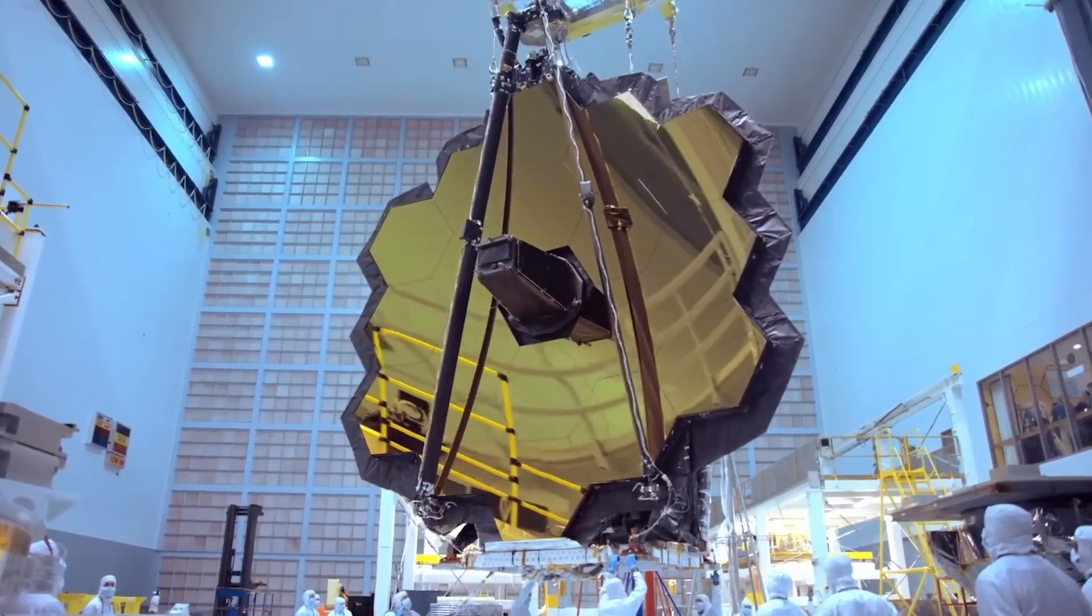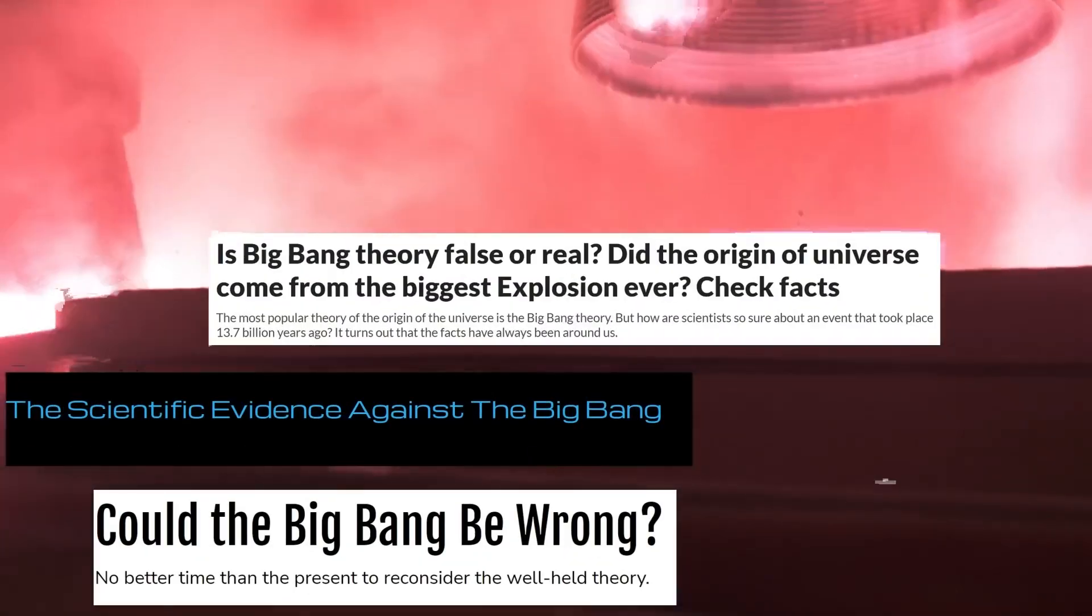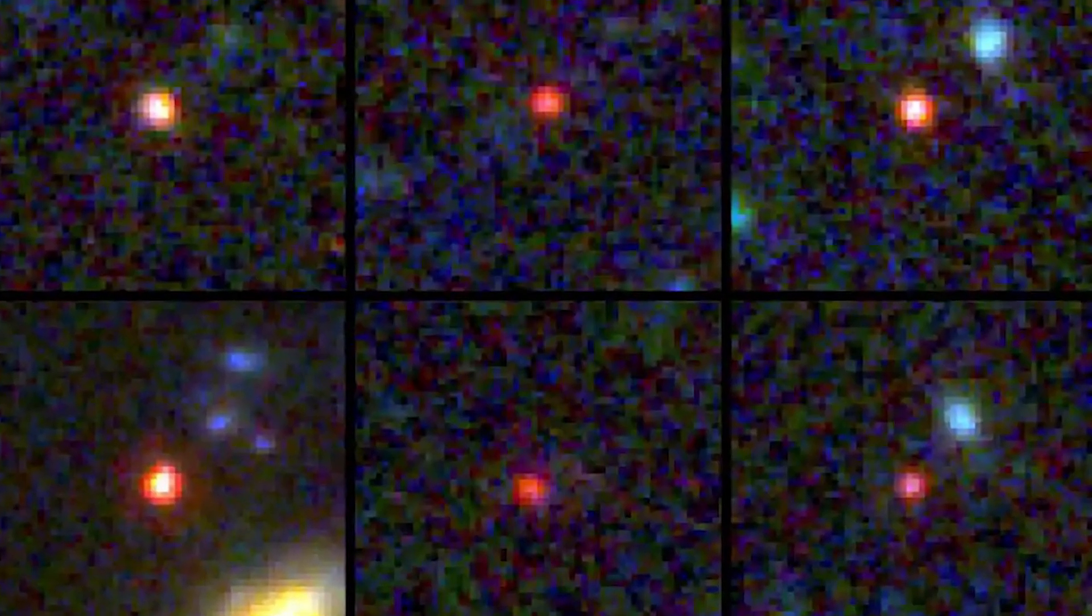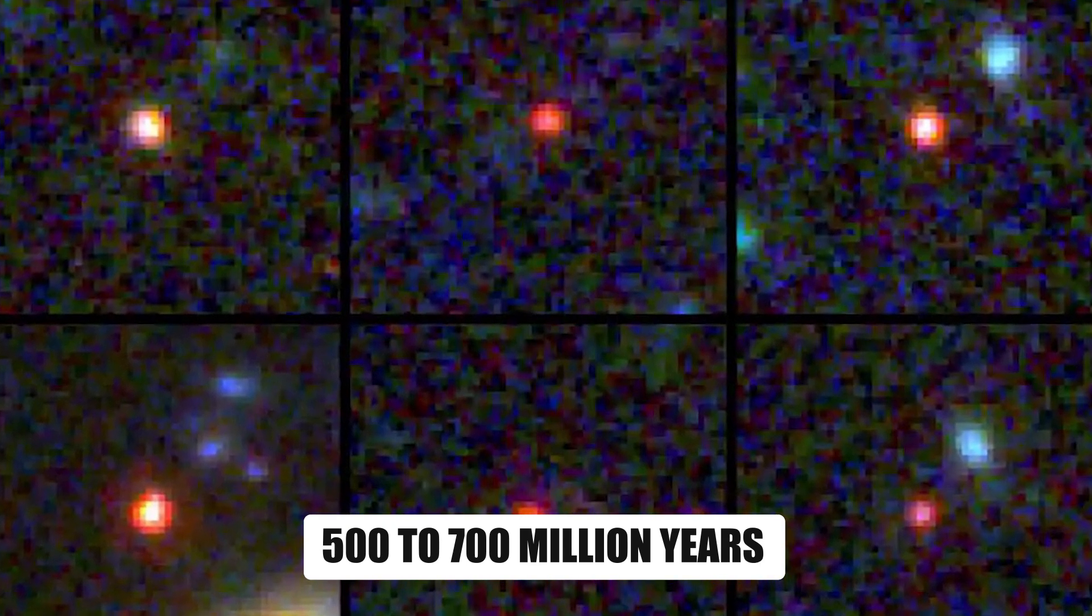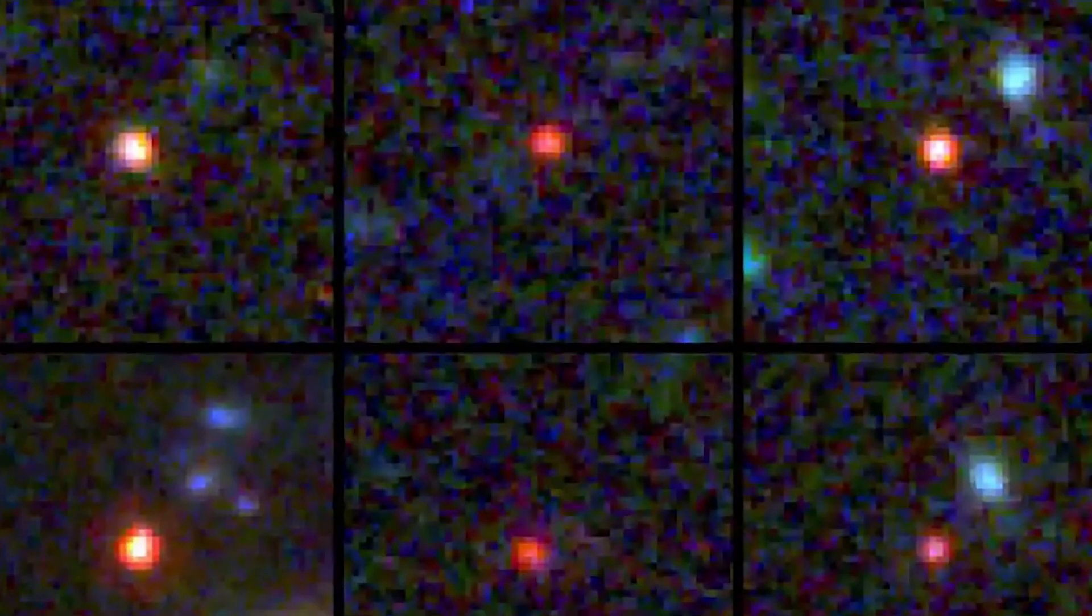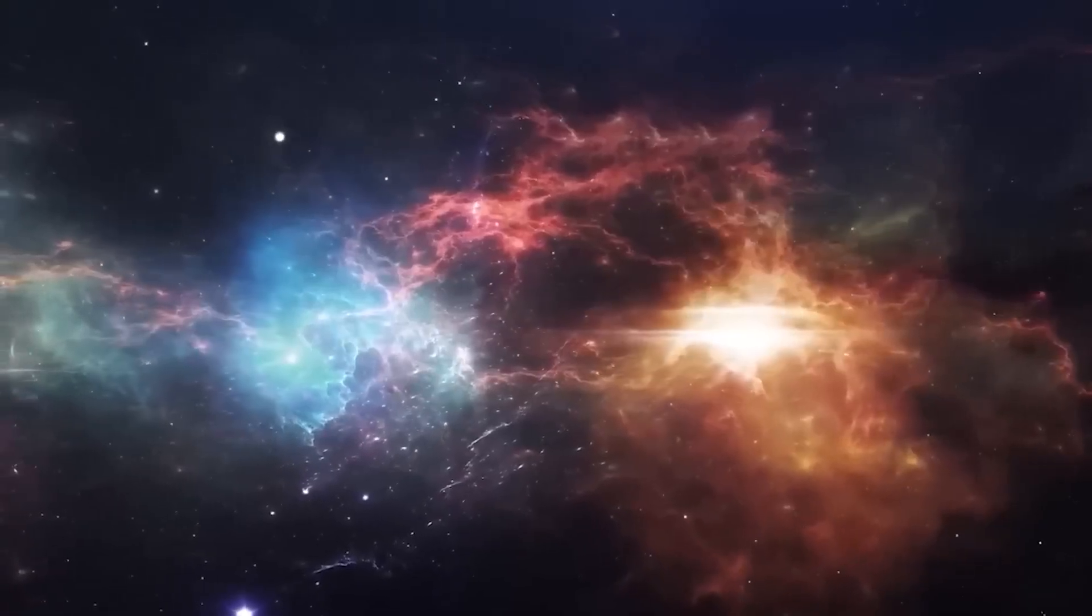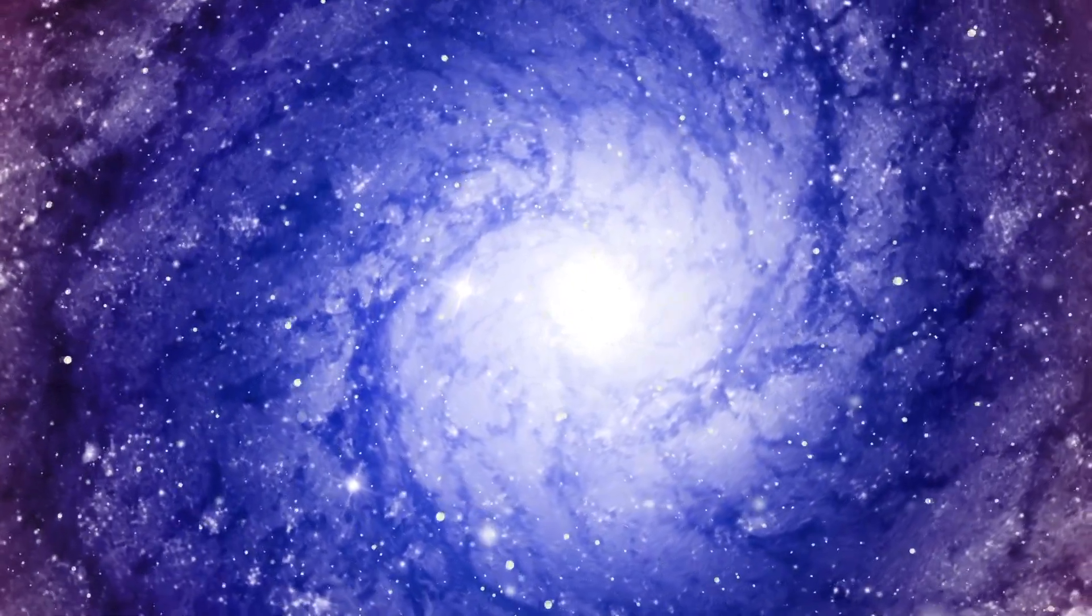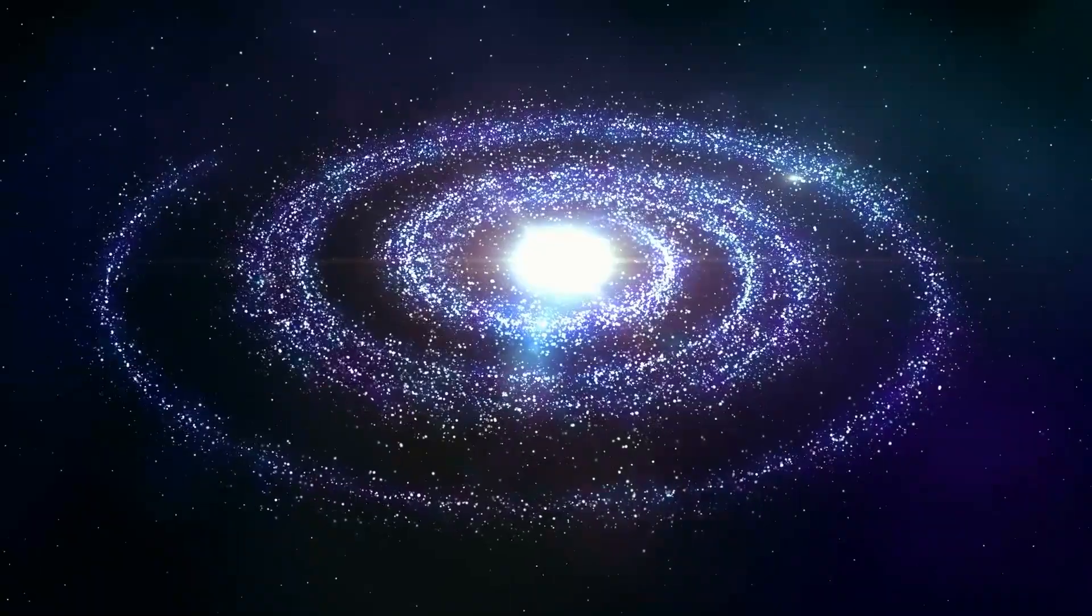Social media platforms have been abuzz with astronomers and scientists speculating and debating the implications of these findings. These ancient galaxies, dating back to a mere 500 to 700 million years after the Big Bang, defy our previous understanding of galaxy formation, which suggested that galaxies take billions of years to form. This new evidence challenges our comprehension of the universe, raising questions about the time it took for galaxies to form and when they began to sprout in the cosmic garden.